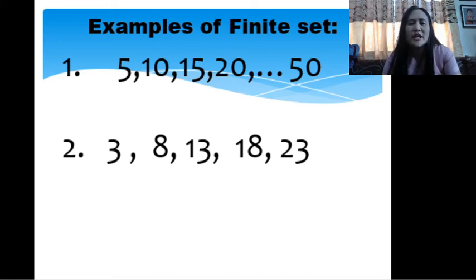5, 10, 15, 20, then you have the ellipses, then you have 50. That is a finite set. We can identify your first term and your last term. So in a sequence, we have what we call terms. 5 here is your first term, then your last term here is 50. So each number here in your sequence is terms. 5 is your first term, 10 will be your second term, 15 is your third term, 20 is your fourth term, and so on, and your last term will be 50.